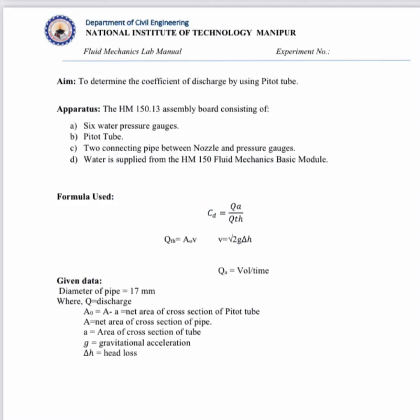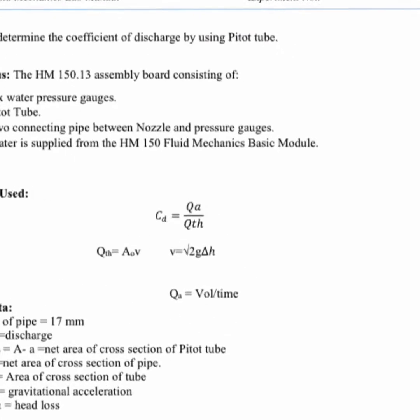The objective of this experiment is to determine the coefficient of discharge by using a Pitot tube. The apparatus used are SM 150.13 and SM 150. To find out the coefficient of discharge, we have to use the formula for CD.